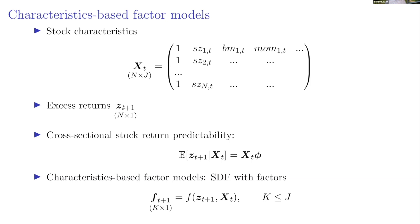We denote excess returns with Z — a vector of N elements. Cross-sectional asset pricing links expected returns on stocks to these characteristics. To summarize this relationship in a reduced-form model, we typically model the stochastic discount factor as a function of a smaller number of factors.